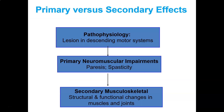The cascade goes: pathophysiology — a lesion in descending motor systems — leads to primary neuromuscular impairment, which is either paresis or spasticity. That then leads to secondary musculoskeletal issues, which are structural and functional changes in muscles and joints.